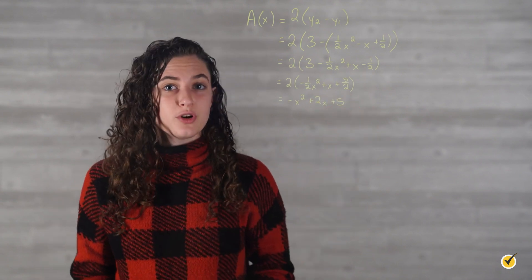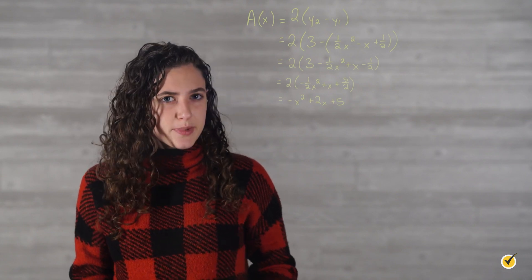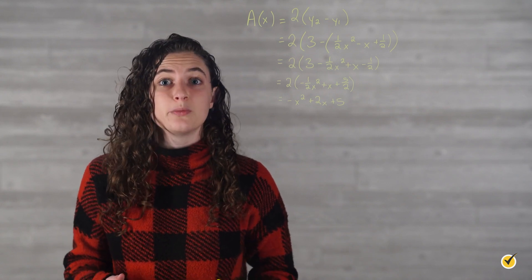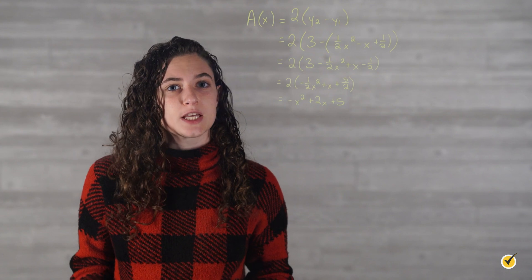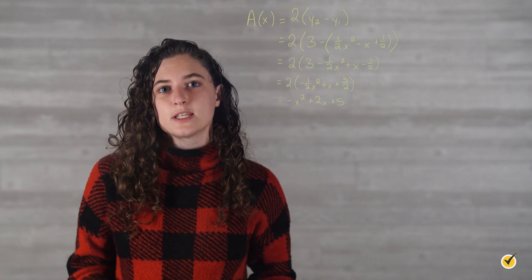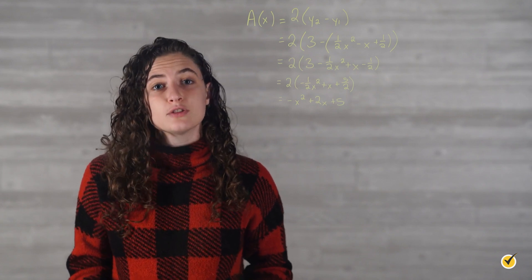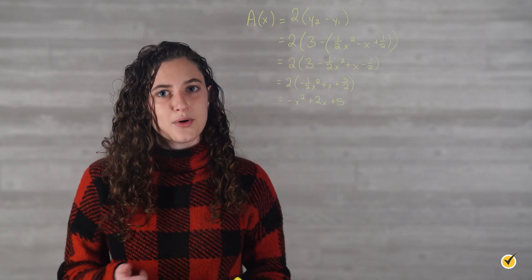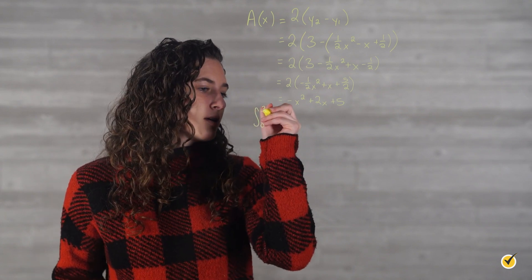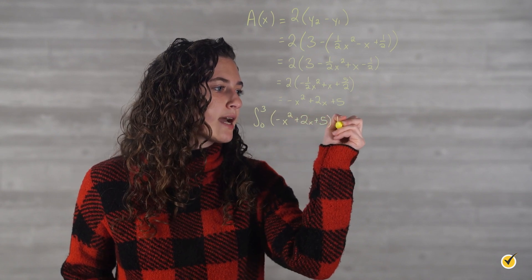Now that we have a function for the cross-sectional area of each slice, we need to take its integral. Since we have area in terms of x and will be integrating in terms of x, we need to check the bounds of the shape in terms of x. The domain for the shape is x from 0 to 3, so the bounds for the definite integral will be 0 and 3. So we'll integrate from 0 to 3 of negative x² plus 2x plus 5 dx.